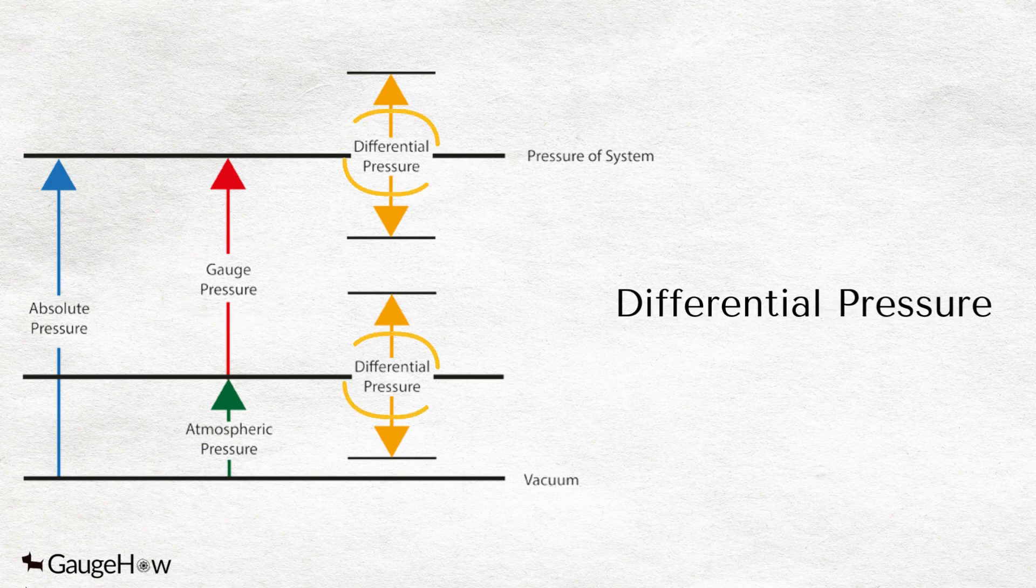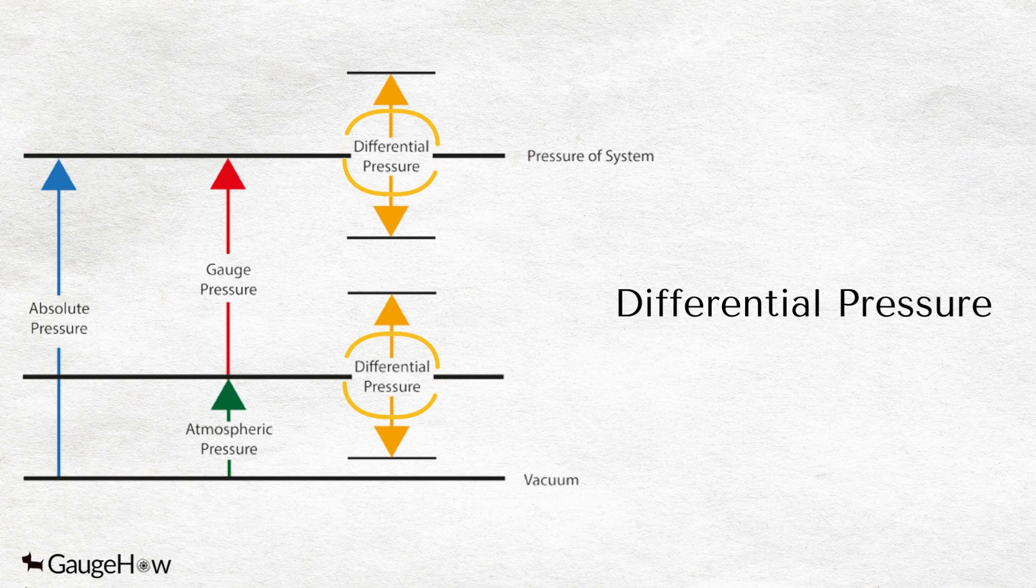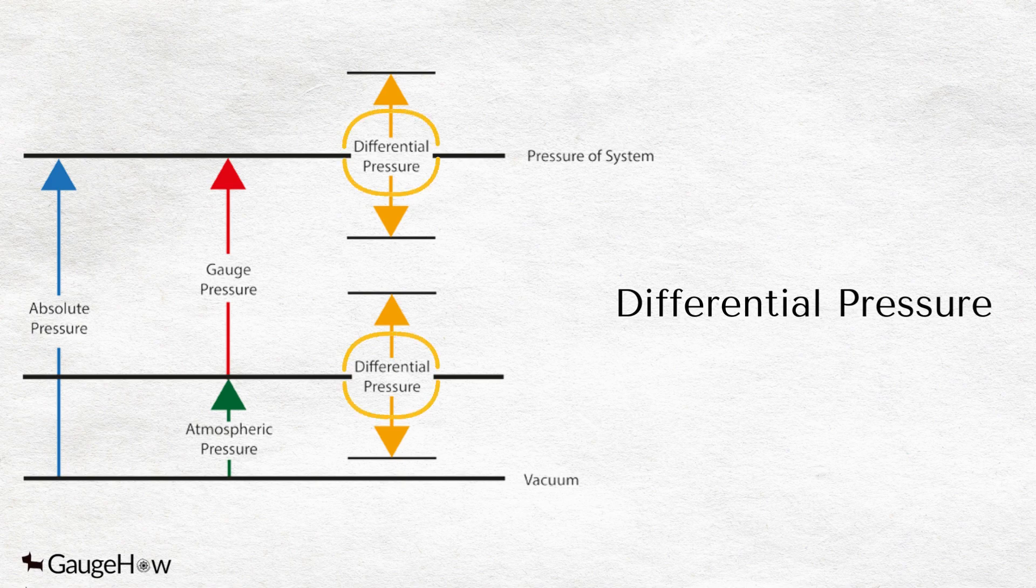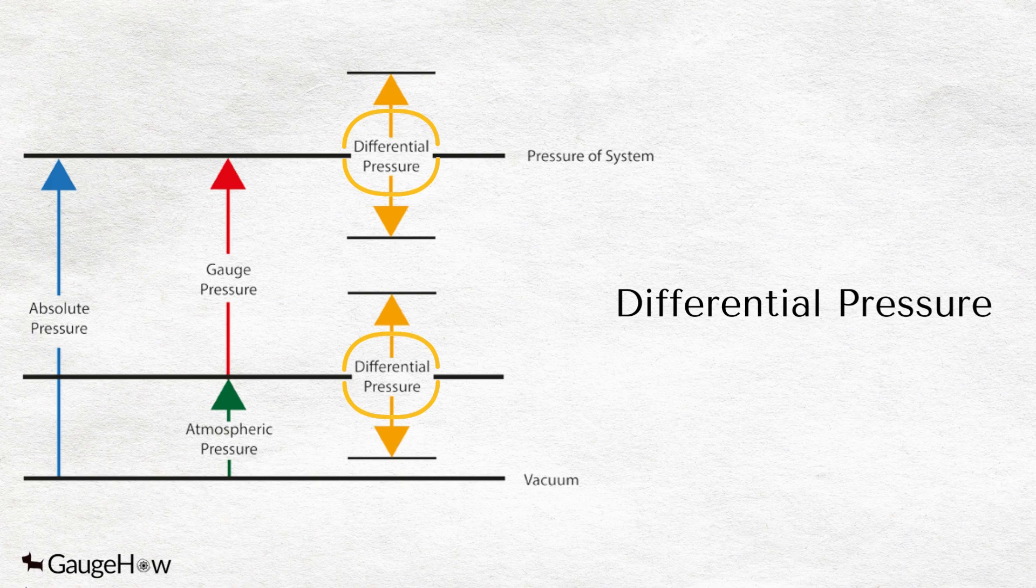Differential pressure measurement is measuring the difference between two types of applied pressure. This form of pressure measurement does not have a reference but measures the two applied pressures.